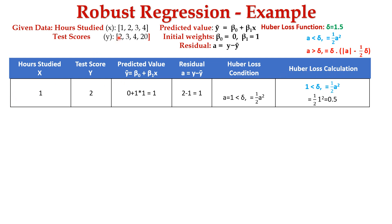For the first point (X=1, Y=2): predicted Ȳ = 0 + 1×1 = 1. Residual A = Y − Ȳ = 2 − 1 = 1. Since A = 1 < δ = 1.5, we use the first Huber condition: ½A² = ½ × 1² = 0.5.